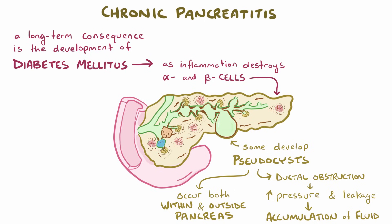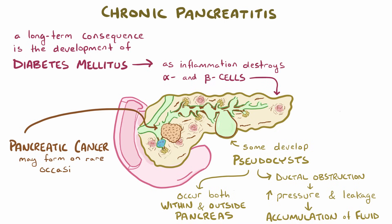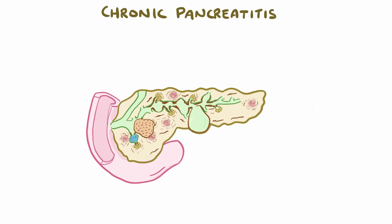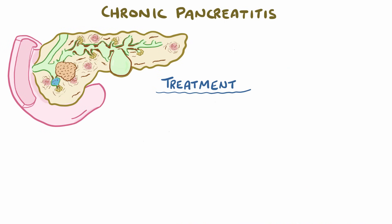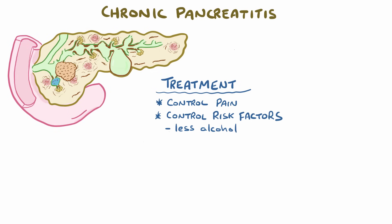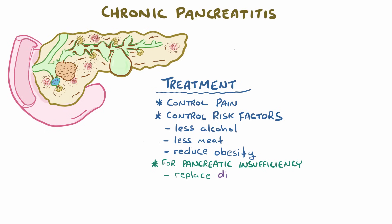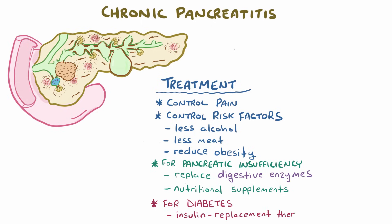Not surprisingly, repeated inflammation can also give rise to pancreatic cancer on rare occasions. Treatment of chronic pancreatitis involves controlling pain and trying to control the risk factors, things like drinking less alcohol, eating less meat, and reducing obesity. Individuals with pancreatic insufficiency might require replacement digestive enzymes and nutritional supplements, and those with diabetes might need insulin replacement therapy.